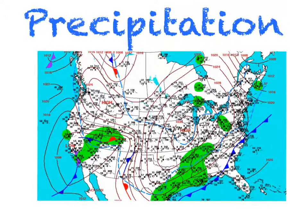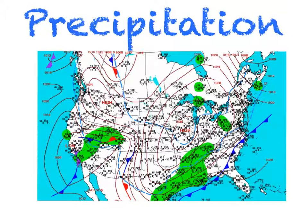Rain forms by warm air getting cooler and rising. Then the water droplets get heavier and heavier until they're too heavy for the clouds to hold, and because of gravity, they fall. Precipitation is going on over here because of this low. Lows can create precipitation.